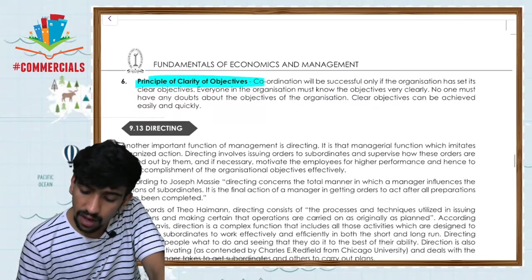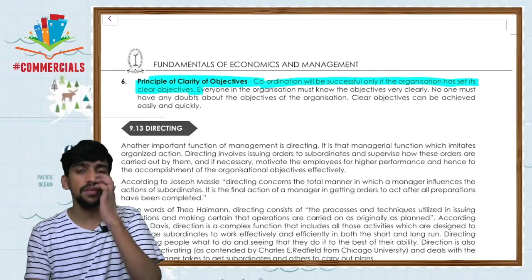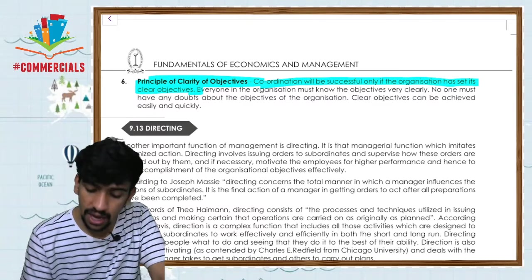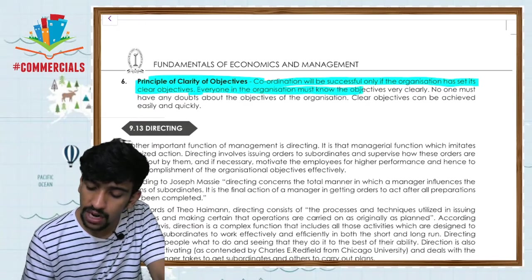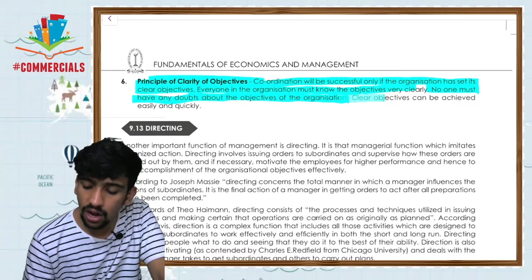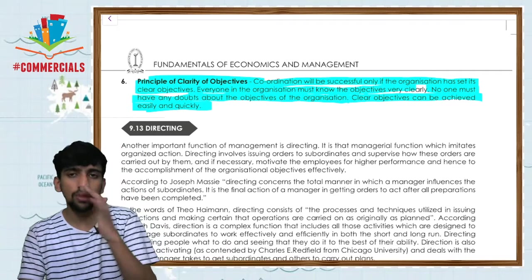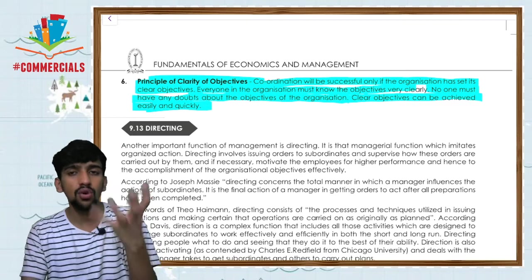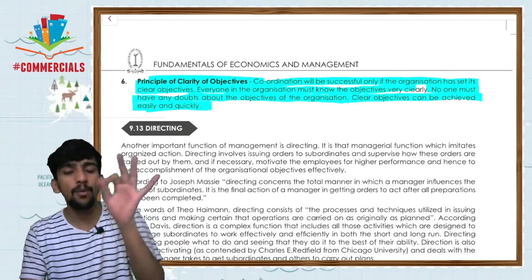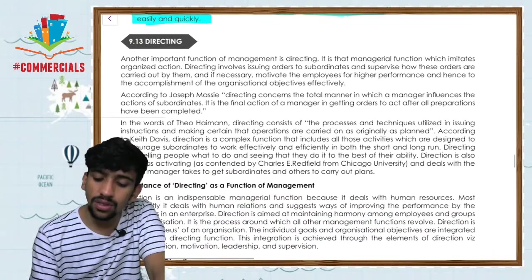The principle of clarity of objective — coordination will be successful only if the organization has set clear objectives. Everyone in the organization must know the objective very clearly with no doubt. Clear objectives can be achieved easily and quickly. If your goals and objectives are clear and everyone knows what to achieve and where to reach, then it becomes easy to find the way.